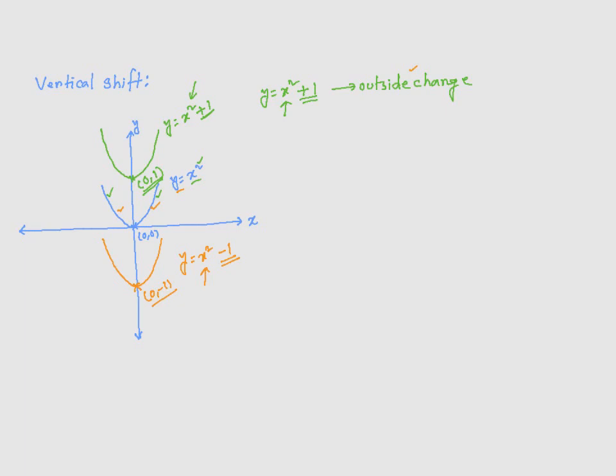In general, an outside change makes the function move vertically, either up or down. Adding a positive constant makes it move up. Subtracting a positive constant makes it move down.